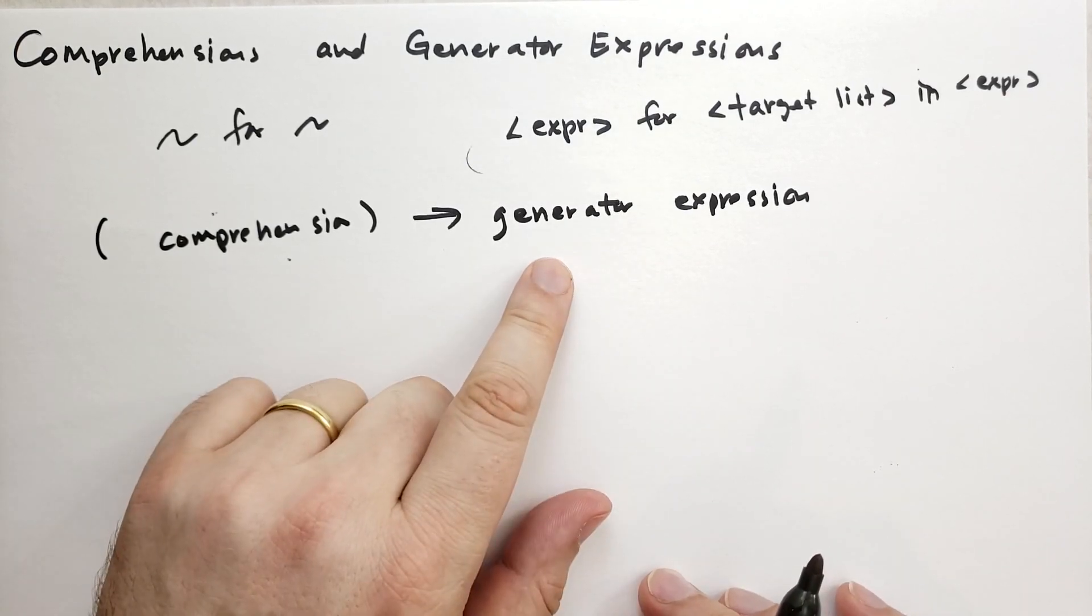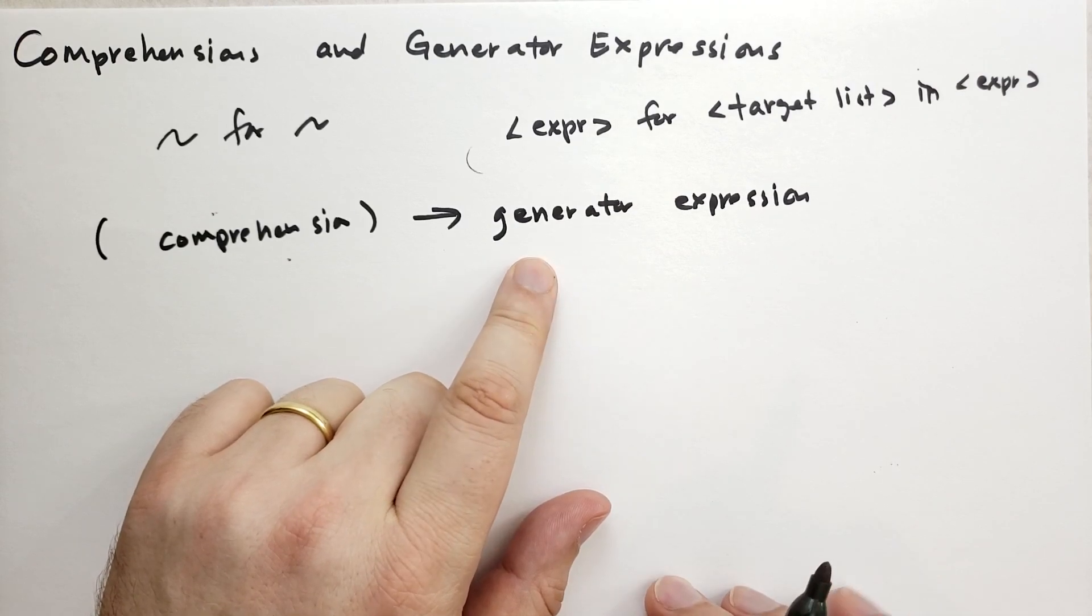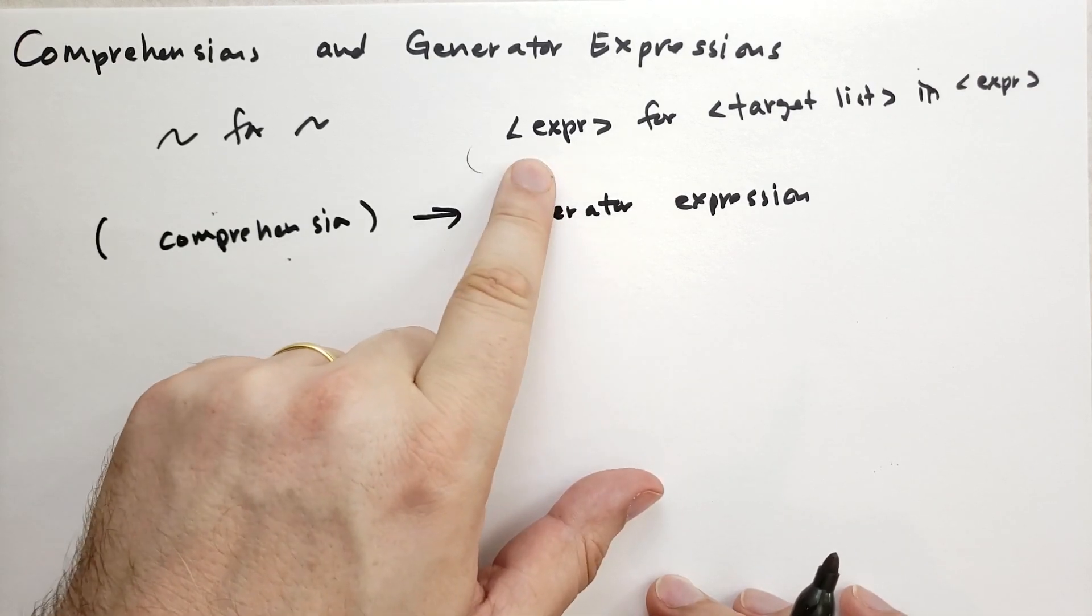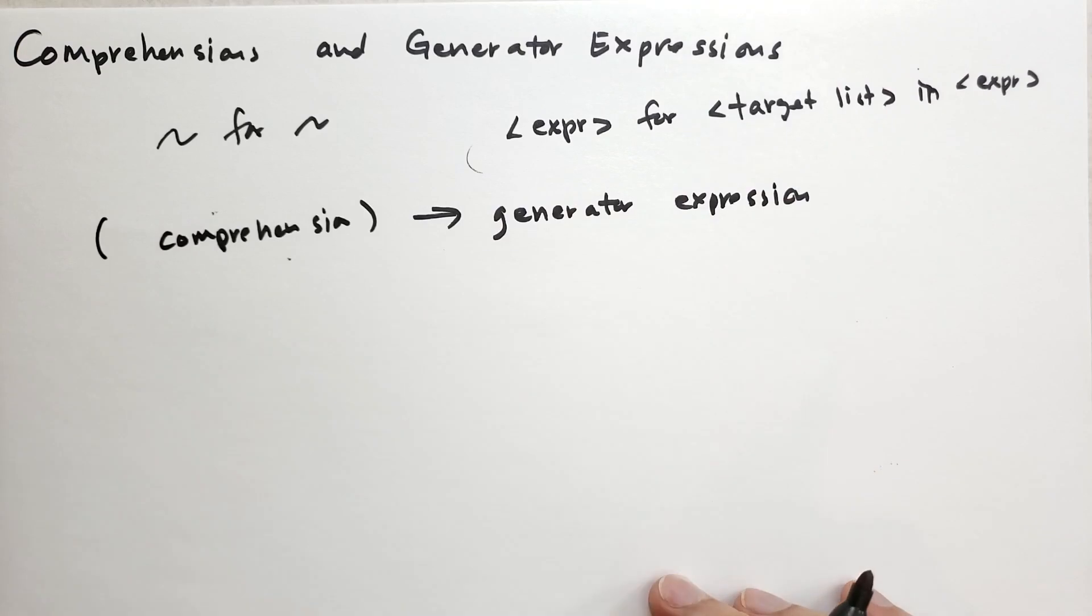It gives you something that's exactly like calling a generator function. However, instead of calling code that has a yield statement inside, it's going to yield the expression for each item in this expression list.